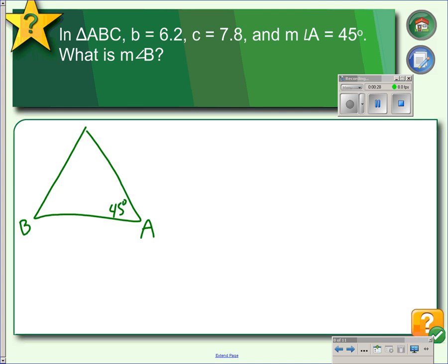Angle A is a 45-degree angle, side b across from angle B is 6.2, and side c across from angle C is 7.8. We are trying to find the measure of angle B.